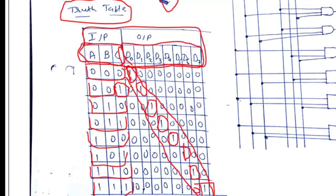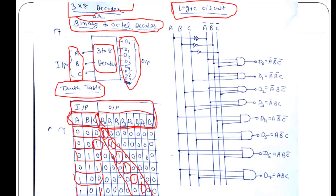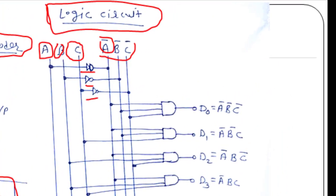Now let's design a logic circuit for the 3-to-8 decoder. A, B, and C are the three inputs, and we create A-bar, B-bar, and C-bar using three NOT gates. For the first combination, D0, all three inputs are zero, so the AND gate is connected with A-bar, B-bar, C-bar. For the second combination, D1 is equal to A-bar B-bar C.